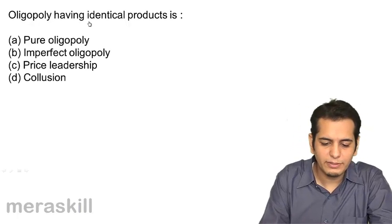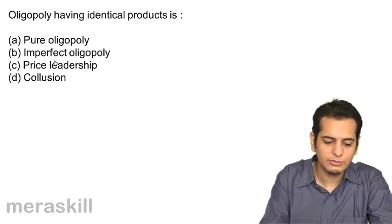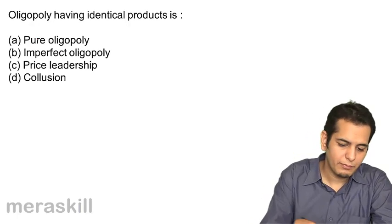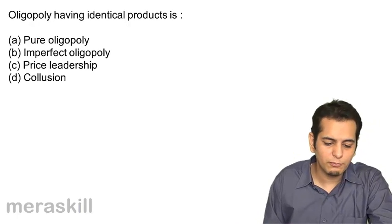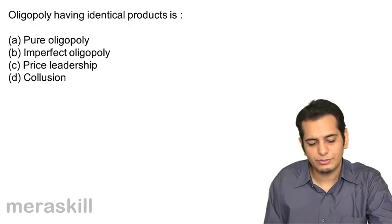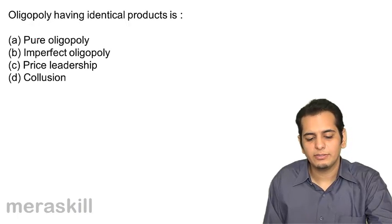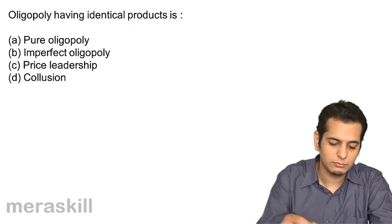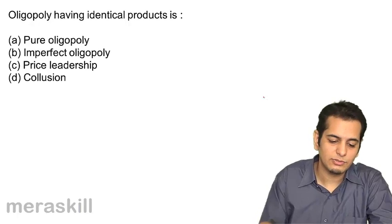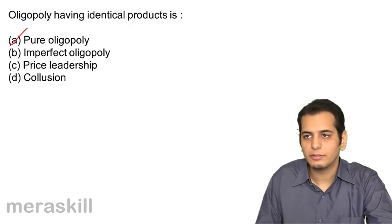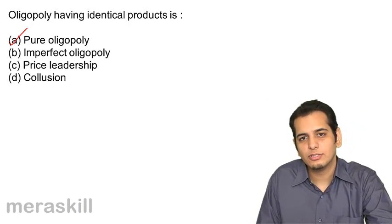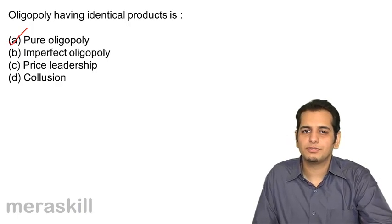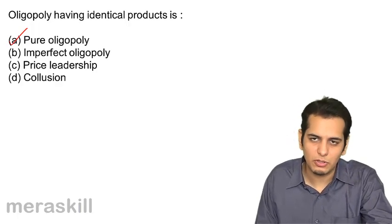Oligopoly having identical products is: A. Pure oligopoly, B. Imperfect oligopoly, C. Price leadership, D. Collusion. The answer is pure oligopoly, because this feature is the same as perfect competition, or pure competition as it is called.